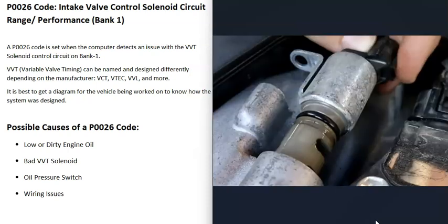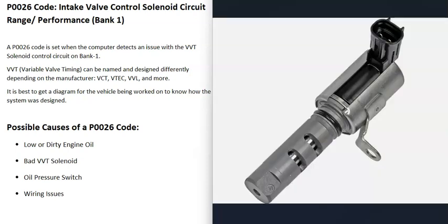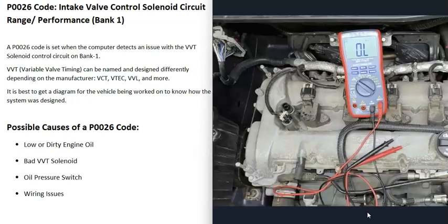The next possible cause is a bad variable valve timing solenoid. Each cam has a solenoid that controls how much oil goes to an actuator located on the front of the cam — this is how the computer adjusts timing. To test the solenoid, use a multimeter set to ohms, check the windings inside the solenoid, look up the rated ohm value for that specific solenoid, and verify the reading falls within that range. If it doesn't, the solenoid is bad.